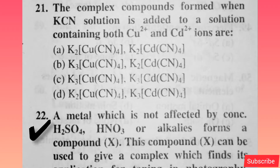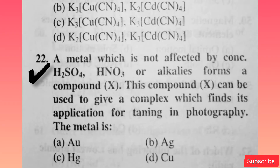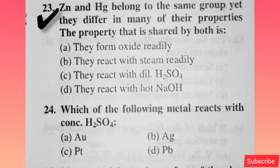A metal which is not affected by concentrated H2SO4, HNO3 or alkalis forms a compound X. The compound X can be used to give a complex which finds application in tanning and photography. The metal is AU — option A is correct. Zn and Hg belong to the same group yet they differ in many properties. The property shared by both is they form oxides readily — option A is correct.